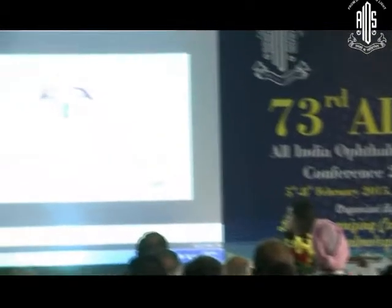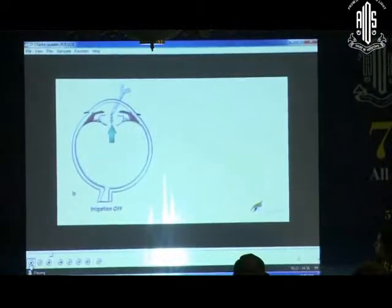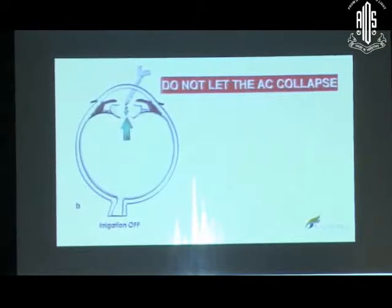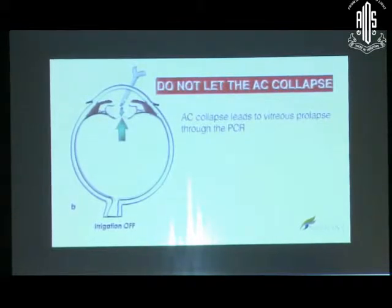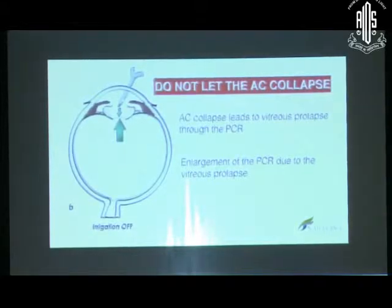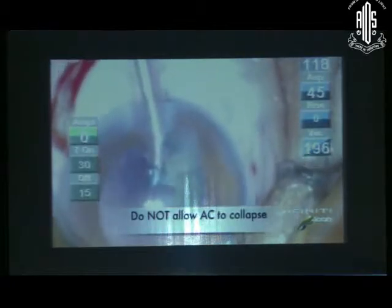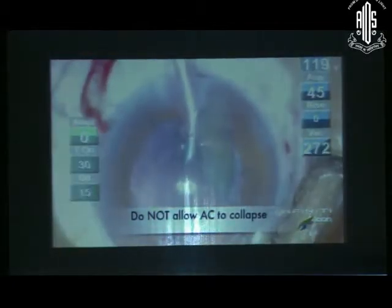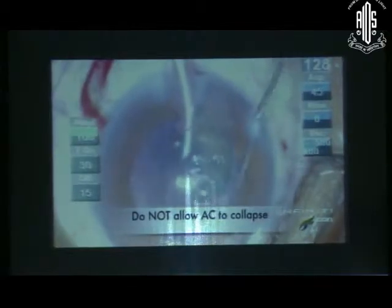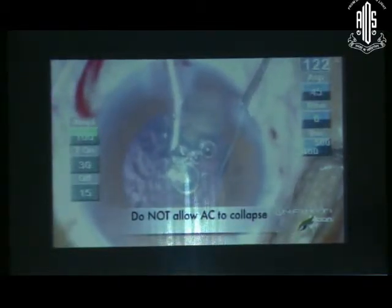Number 1: Do not let the anterior chamber collapse. The anterior chamber collapse leads to vitreous prolapse through the rent, which leads to enlargement of the PCR. The lens matter may also drop into the vitreous cavity. Do not withdraw the phacoprobe on seeing a PCR. Keep the irrigation on. Inject OVD under the nucleus through the side port, and either withdraw the phacoprobe out of the eye or complete the phacoemulsification under the cover of OVD.